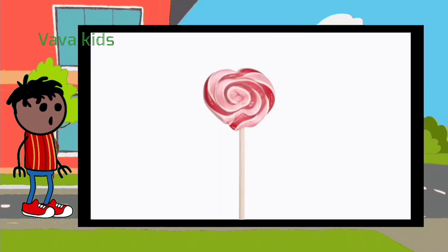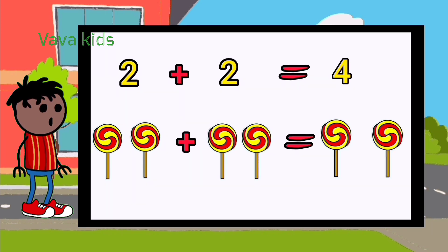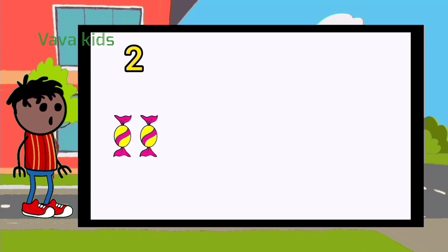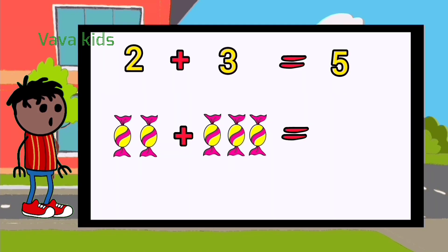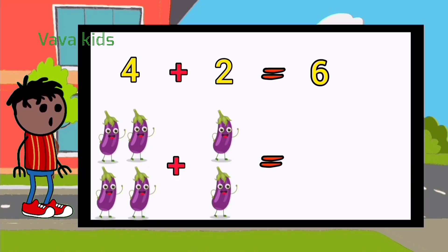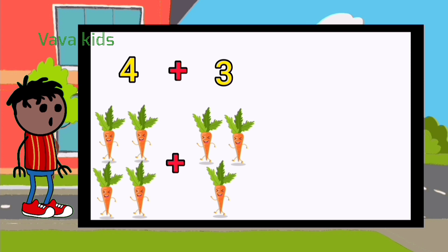Lollipop: 2 plus 2 equal 4 — 1, 2, 3, 4. Chocolate: 2 plus 3 equal 5 — 1, 2, 3, 4, 5. Brinjal: 4 plus 2 equal 6 — 1, 2, 3, 4, 5, 6. Carrot: 4 plus 3 equal 7 — 1, 2, 3...